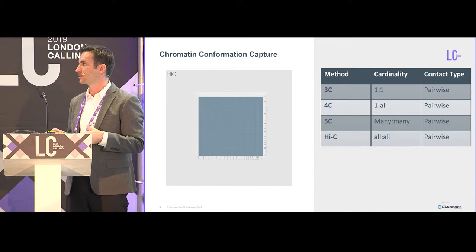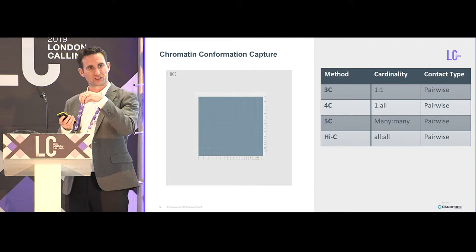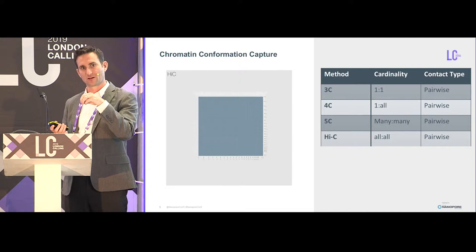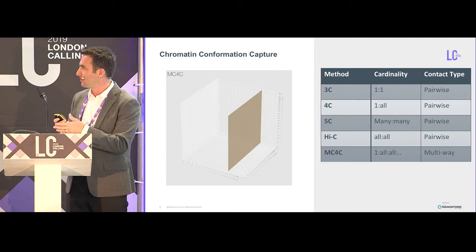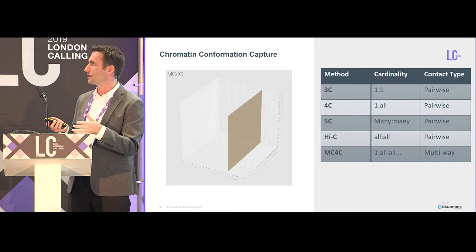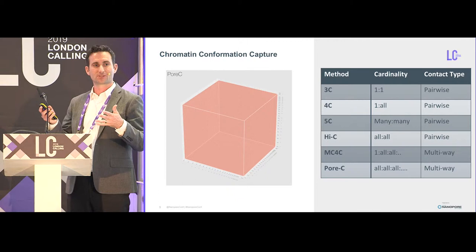What I want to introduce is the idea of multiway contacts. If you imagine there's a pairwise contact, what other pieces of the genome are interacting with those pairs of points? For every additional interaction in multiway contacts, you're adding an additional dimension — I couldn't draw a hypercube, so we'll stick with three for now. There was a method released last year called MC4C from the Wouter de Laat lab, which is a targeted method — you take one point in the genome and look at all multiway interactions associated with that. Pore-C is our attempt to expand this to an unbiased whole-genome way of getting all these multiway interactions.